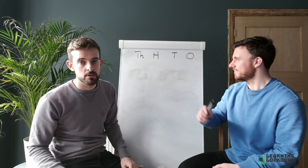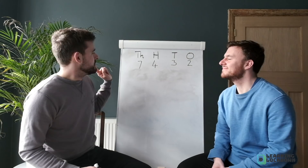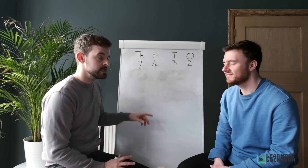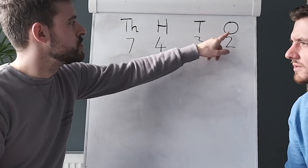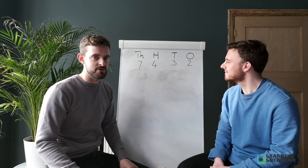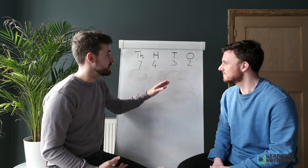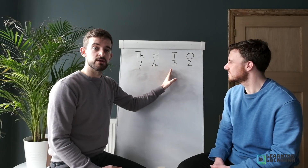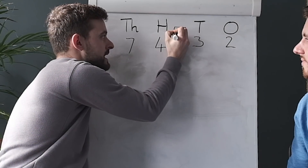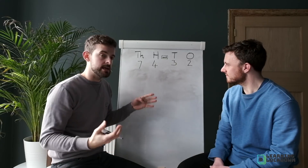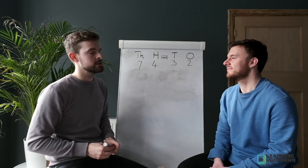Mr S is going to use four digits — put them in any order — and we're going to look at what number we get. All we do is read from left to right and read what we see: seven thousands, four hundreds, three tens, two. Three tens makes 30, and we put those two digits together to create 32. So we should say seven thousand, four hundred and thirty-two. There's always an 'and' between the hundreds and the tens, no matter how big the number.